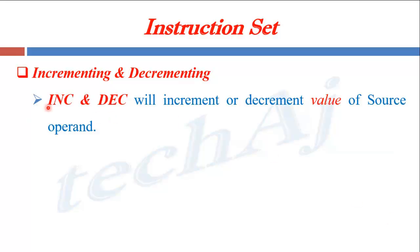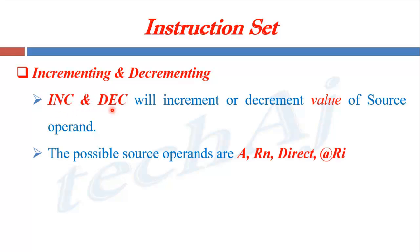Always remember that increment and decrement instructions will increment or decrement the value of the source operand. The possible source operands of these instructions are: the accumulator register A, any register from the register bank R0 to R7 (represented as Rn), a direct memory address, or an indirect memory address pointed by the register pointer @R0.